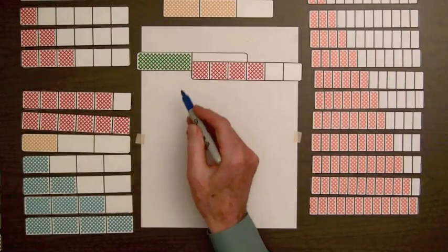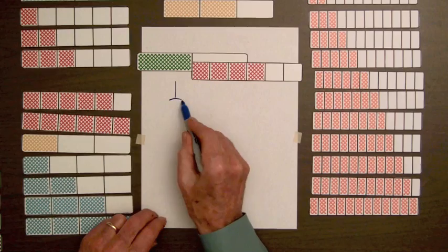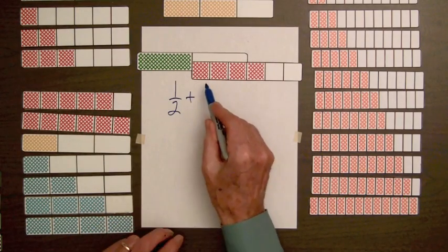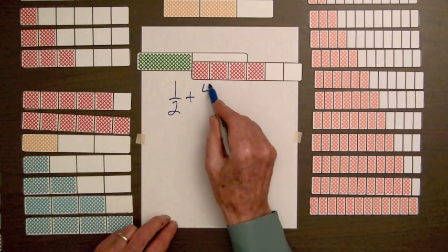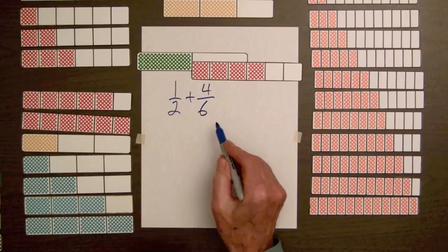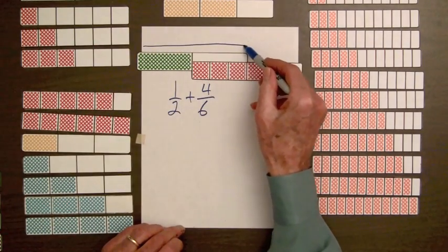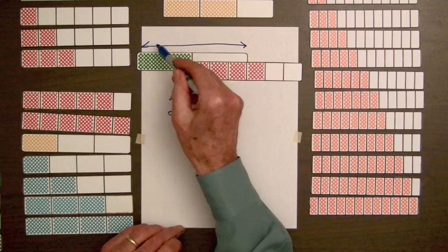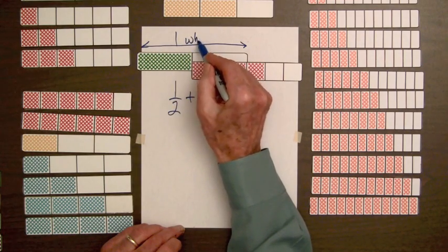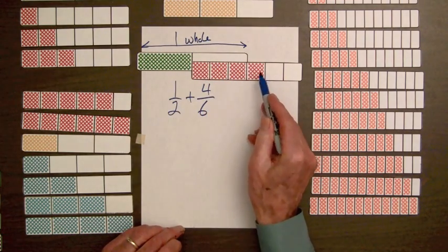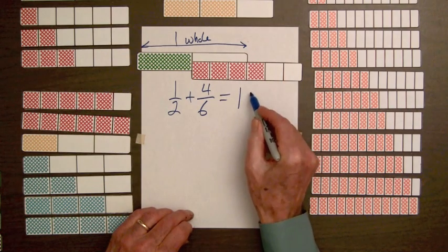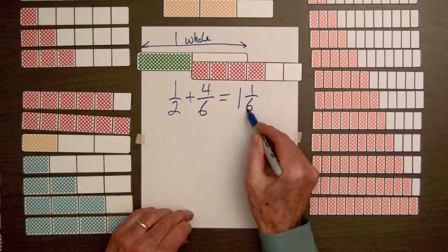Now, we've got one-half represented, we've got four-sixths represented, and you can see that's one whole bar. We can do this up here. That's one whole, one whole and one-sixth left, so that's going to be one and one-sixth.